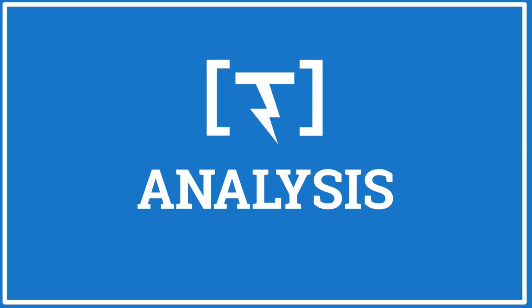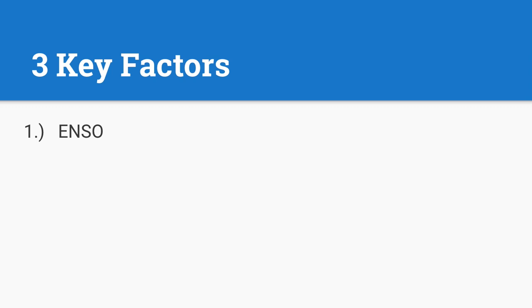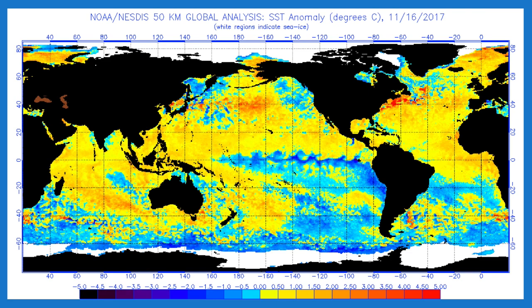We're going to start off with the analysis. There are three key factors here. Number one is ENSO. Number two is the QBO. And number three is the AO. So what the heck are those? Let's get right into it.